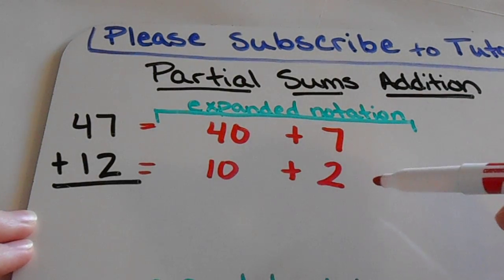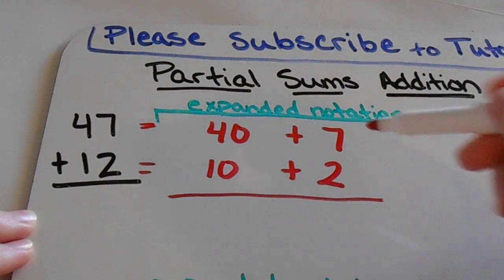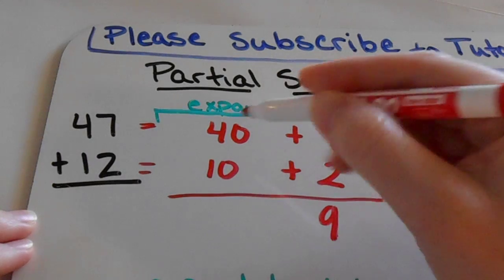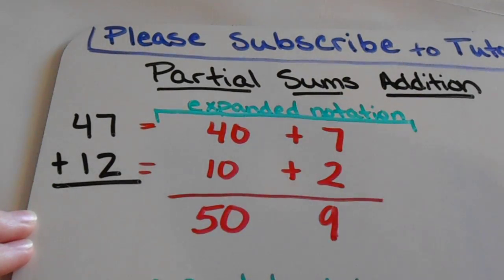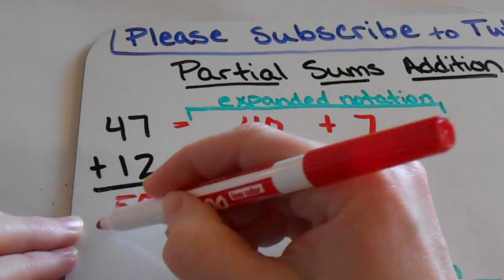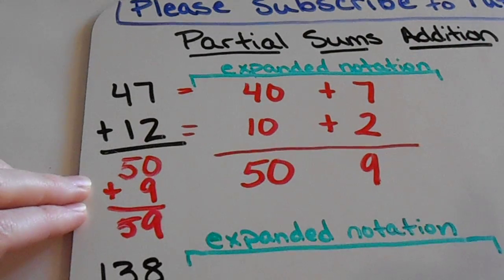Now that I have my numbers broken out into their parts, I'm going to simply add those parts together. 7 plus 2 is 9. 40 plus 10 is 50. Then I can rewrite my numbers over here underneath my original problem to get 59.